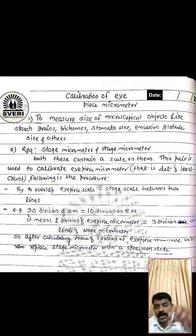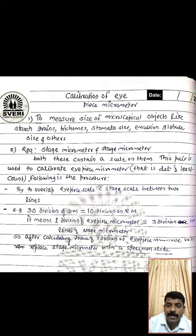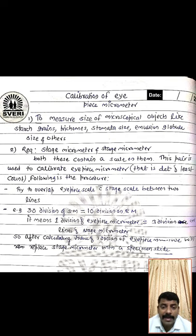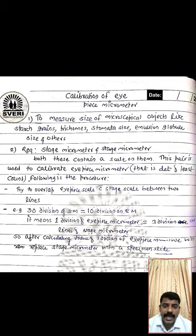First, we keep the stage micrometer on the stage, then we place the eyepiece micrometer in the upper nose of the microscope. We then try to coincide or overlap the lines of the eyepiece micrometer with the stage micrometer. Essentially, we need to identify and determine the least count — the value of one division of the eyepiece micrometer.